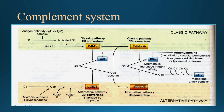Both pathways lead to formation of an enzyme called C3 convertase. In the classic pathway, C1 — the first complement protein with subunits C1Q, C1R, and C1S — gets activated and converts C4 and C2. C4 has components C4A and C4B; C2 has components C2A and C2B. C4B and C2A combine to form C3 convertase. C3 convertase then cleaves C3 into C3A and C3B. C3A is a very important anaphylotoxin.